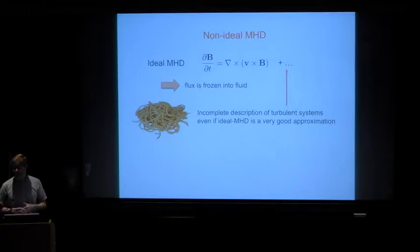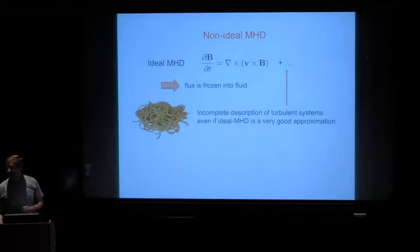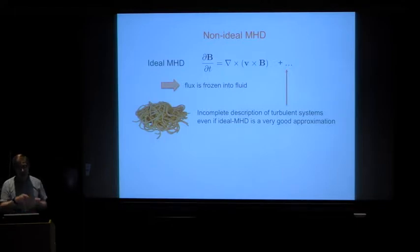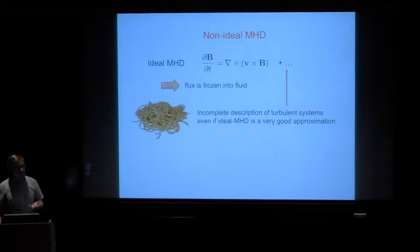Ideal MHD is always an approximation, and there's always more stuff on the right-hand side of this equation. In many astrophysical systems, in principle we should worry about extra terms even if ideal MHD is itself a very good approximation. If the system is turbulent, it will be stirring around the magnetic field and you'll get a spaghetti-like structure — that will amplify the magnetic field and the scale on which it reverses direction tends to become smaller with time. It's sort of like stirring a coffee cup with some cream, getting smaller and smaller structures. In purely ideal MHD that just continues, but eventually something breaks — magnetic reconnection and other effects that go beyond ideal MHD.